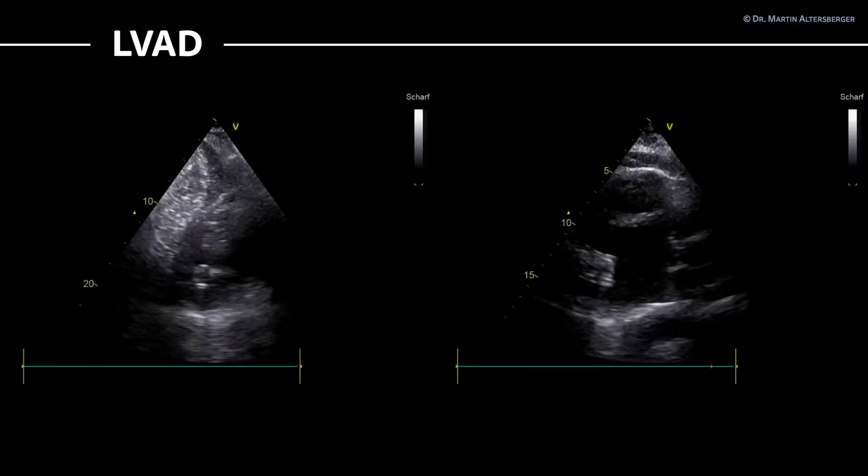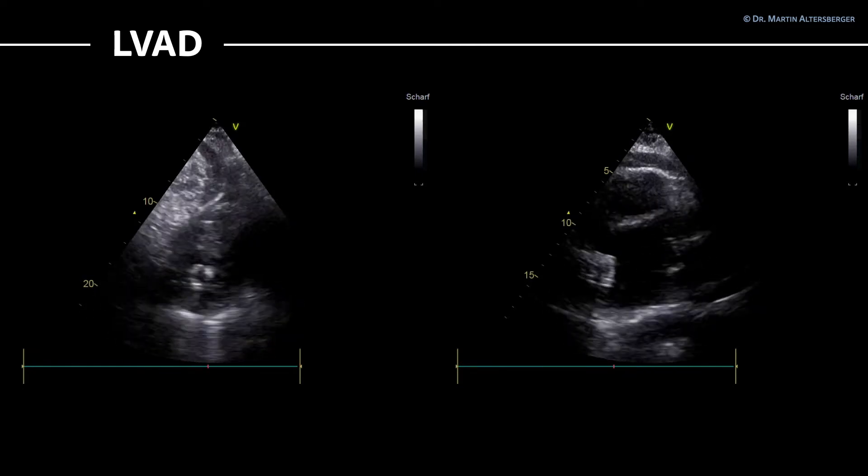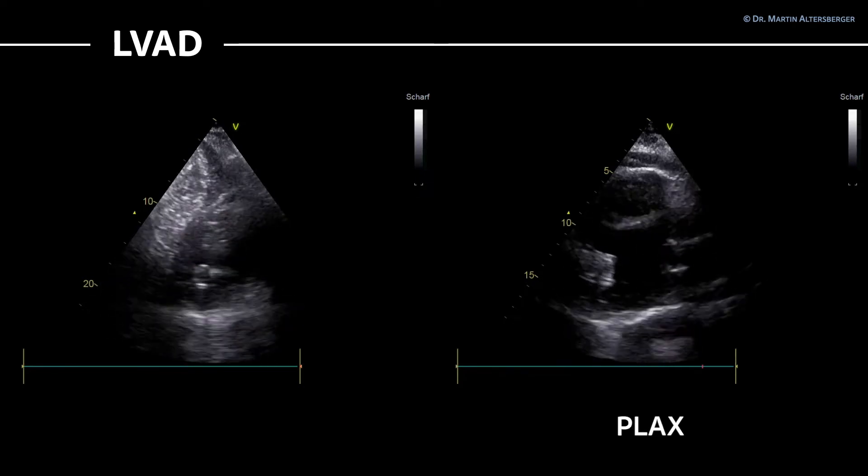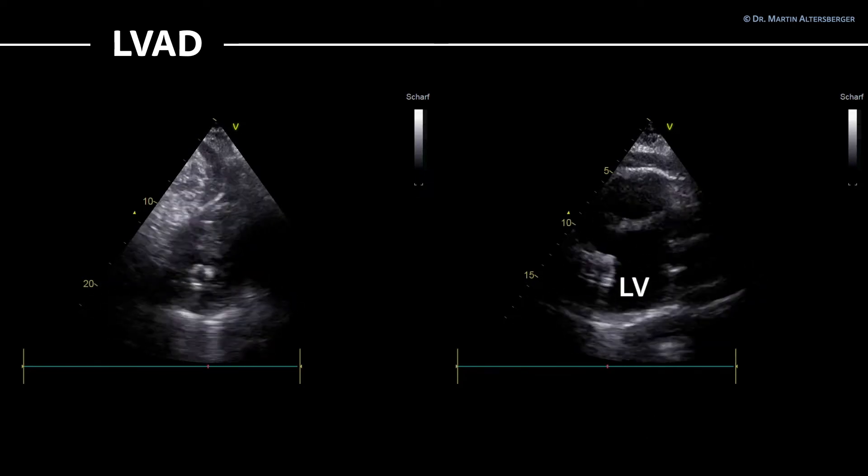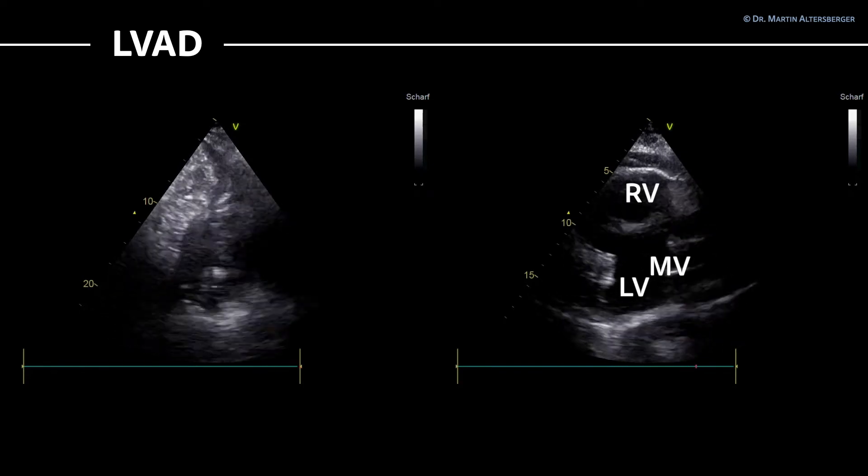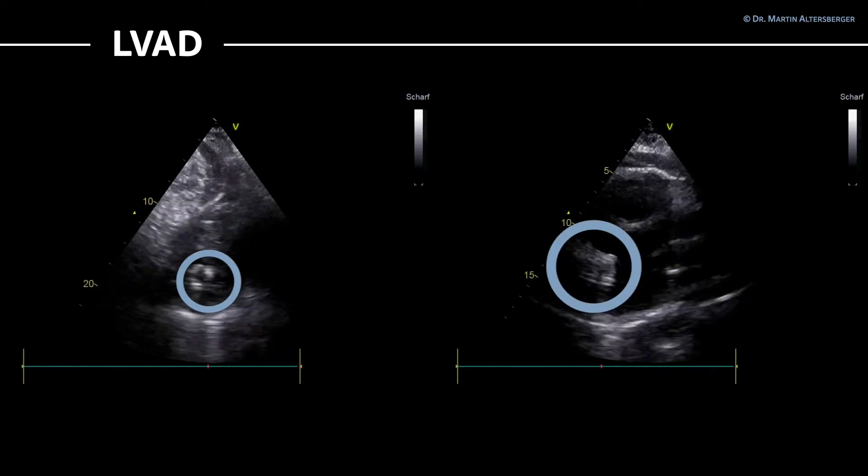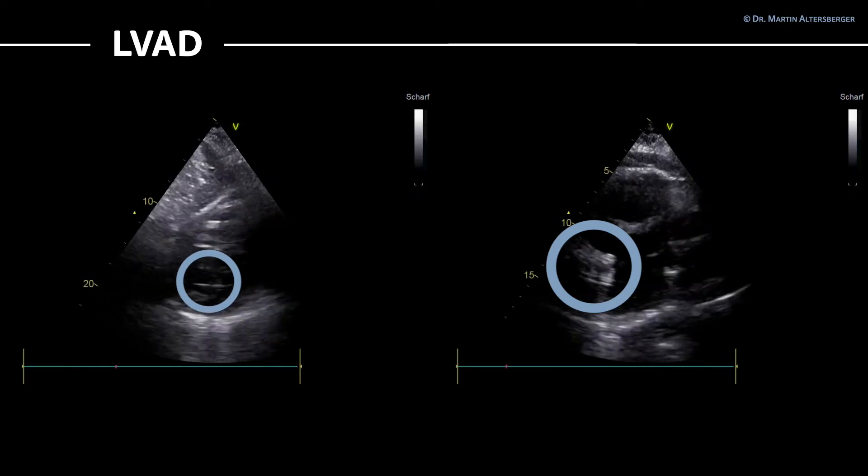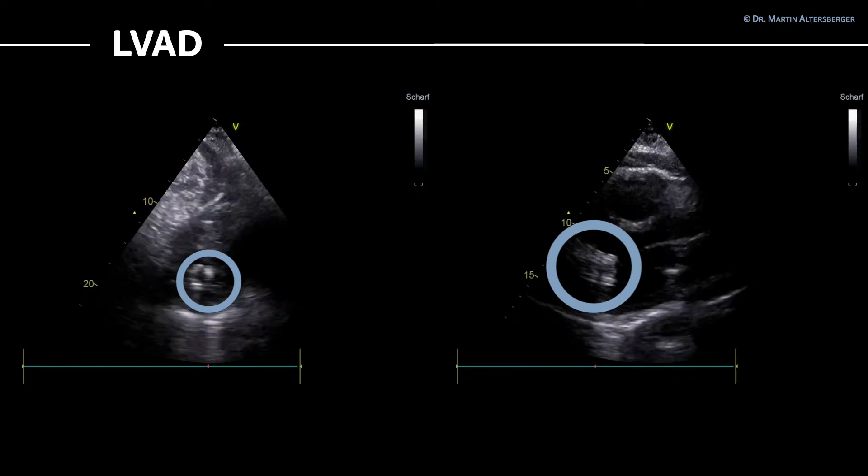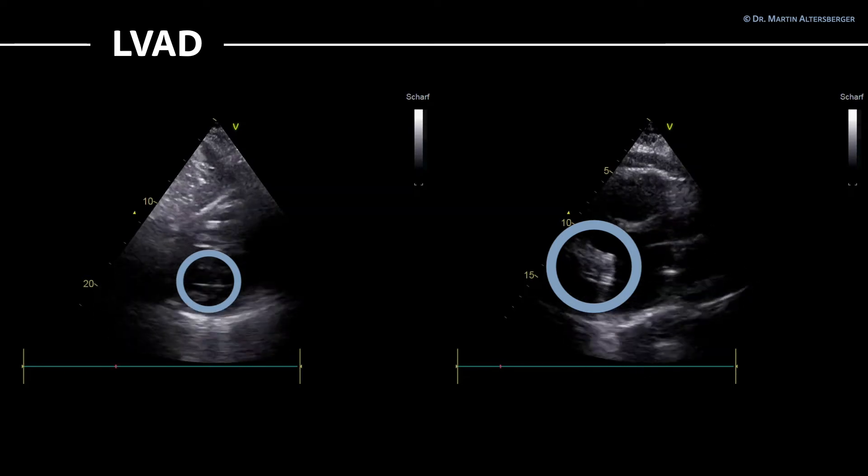In this specific view, you see that there is a structure in the center of the heart which doesn't belong there. On the right-hand side, you have the same patient in a parasternal long axis view. You can see the left ventricle, the mitral valve, the right ventricle, and in the center of the left ventricle, there is this assist device. So be aware that with a left ventricular assist device, you cannot measure diastolic dysfunction.